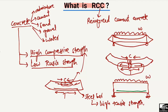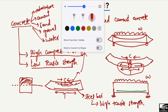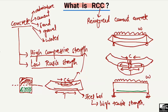If we draw the cross-section of the beam, at the top we have the compression zone and at the bottom we have the tension zone. For tension, we provide the reinforcement. For compression, we rely on the concrete itself.